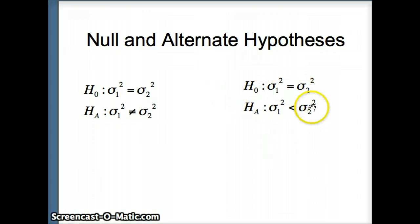Variance 1 equals variance 2 versus variance 1 is less than variance 2. That would be a one-tailed test. Variance 1 equals variance 2 versus variance 1 is greater than variance 2. That is a one-tailed test, this one to the right and this one to the left.